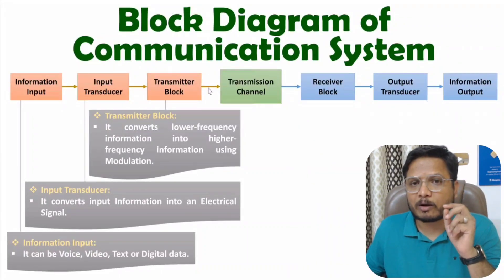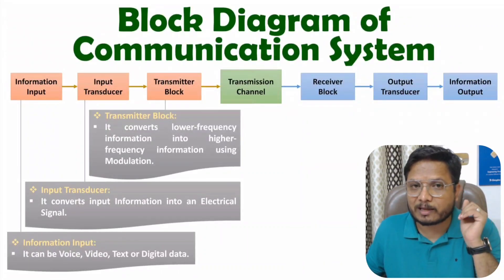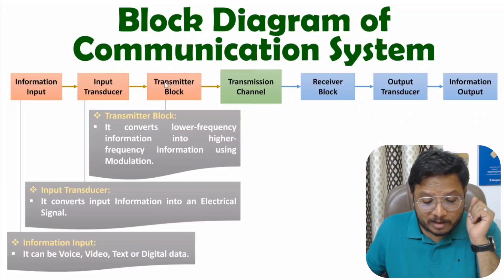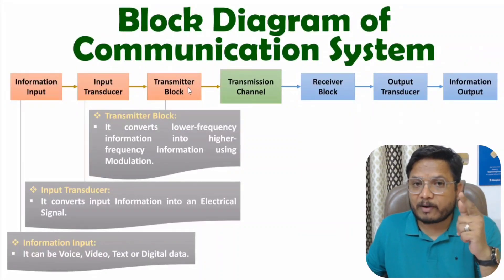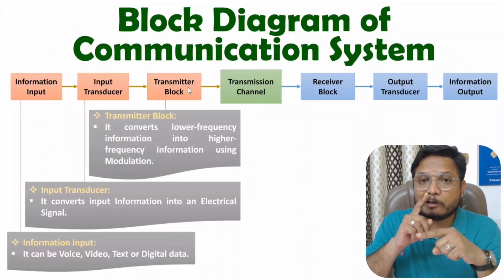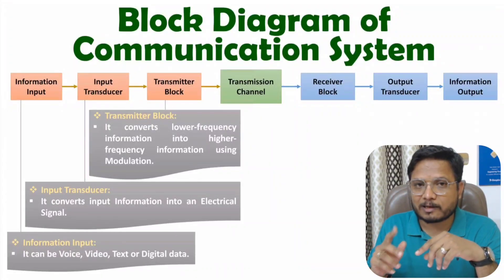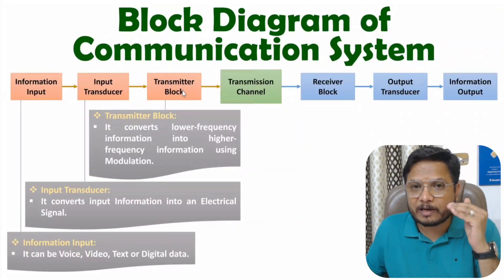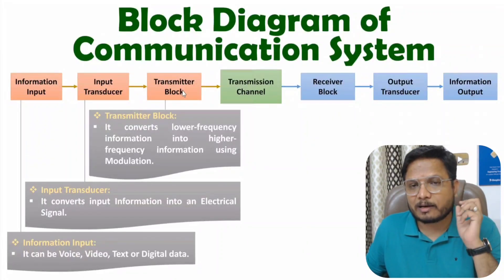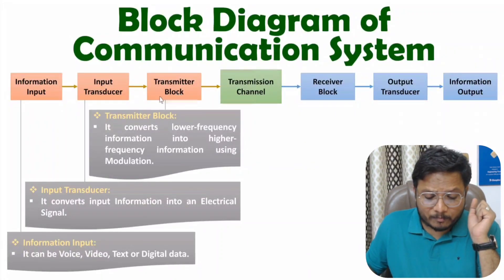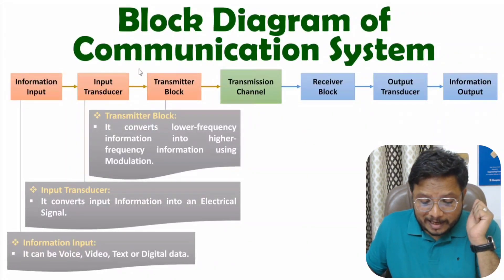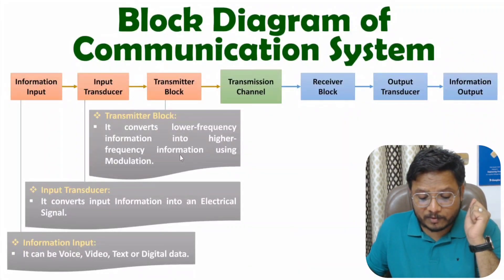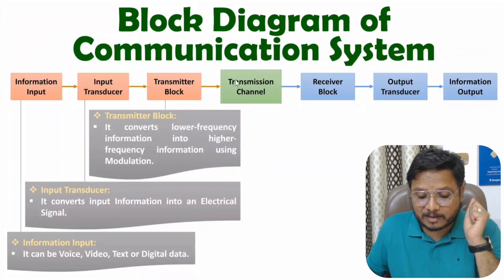Inside the transmitter block there can be many other blocks as well, like an amplifier that converts a low energy signal into a high energy signal, as well as a filter and a mixer. So on the sender side we have high frequency information with higher energy, and that is given to the transmission channel.